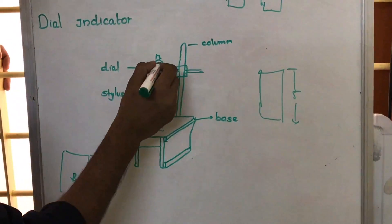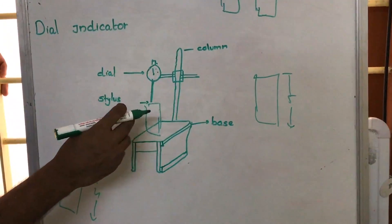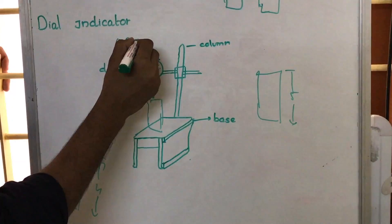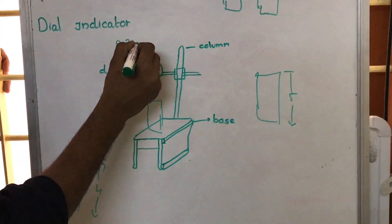And this deflection can be measured from this dial gauge. And suppose if deflection is say 0.2 cm or 0.2 mm,